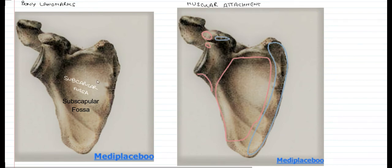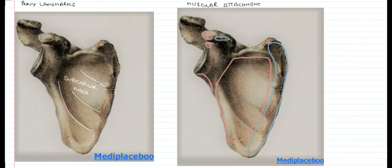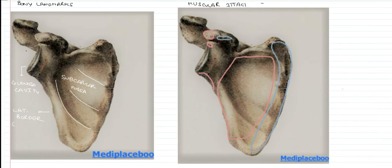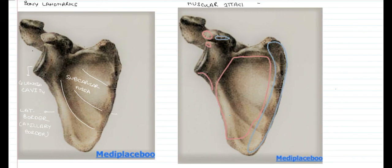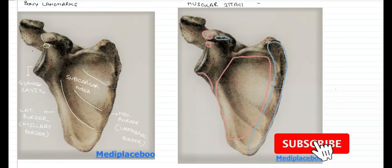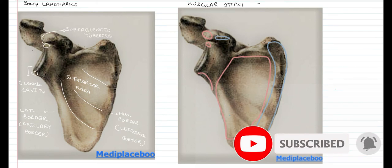There are also three to four oblique ridges which travel from the medial border to the lateral border of the scapula. The easiest way to identify the lateral border is by locating the glenoid cavity, which is present laterally. The lateral border is also known as the axillary border, whereas the medial border is also known as the vertebral border, since it is closer to the vertebral column. Superior to the glenoid cavity lies the supraglenoid tubercle, and inferior to it lies the infraglenoid tubercle.